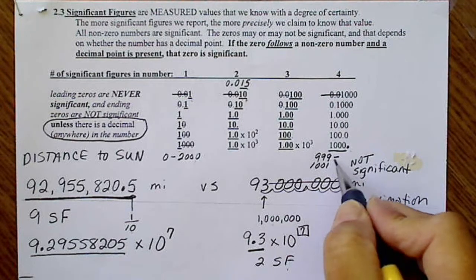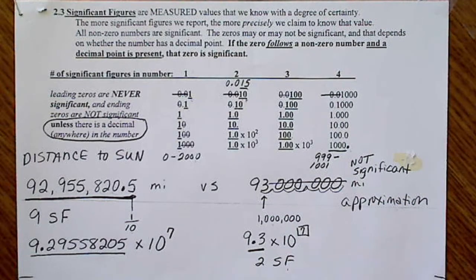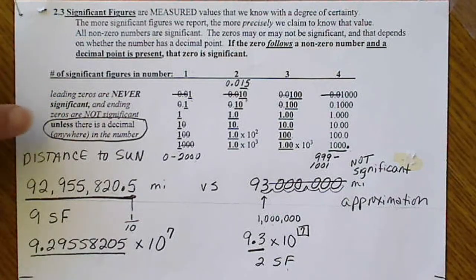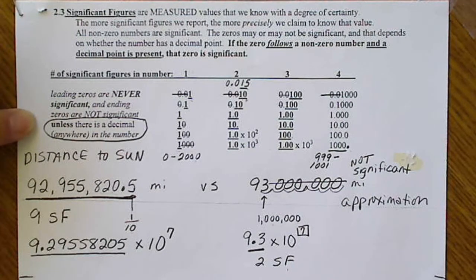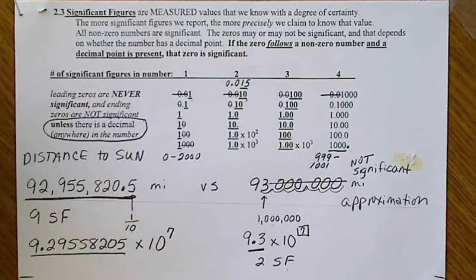Again, we do not need to know this range of values. What we need to make sure we know is when do the zeros count, or in other words, when are they significant, and when do we cross them out. And then we are going to look at any number and state how many significant figures it has.